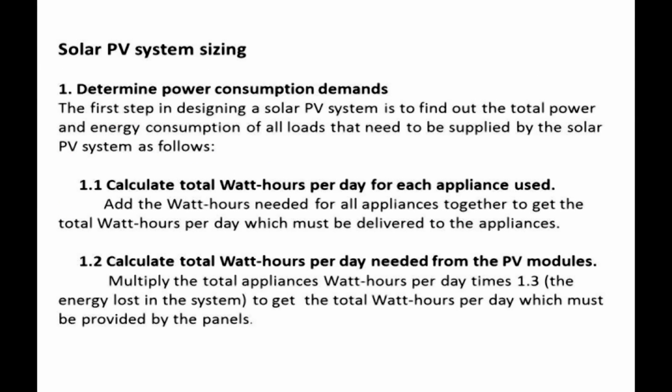Solar PV system sizing. Step 1: Determine power consumption demands. The first step in designing a solar PV system is to find out the total power and energy consumption of all loads that need to be supplied by the system. Step 1.1: Calculate total watt-hours per day for each appliance used, then add the watt-hours needed for all appliances together to get the total watt-hours per day which must be delivered to the appliances.